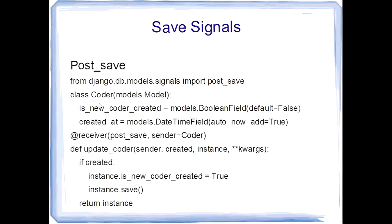Again, there is a model named coder having two parameters: is_new_coder_created and created_at. These two fields we are going to use for this model. Then we call the decorator having two parameters: post_save and sender is coder.